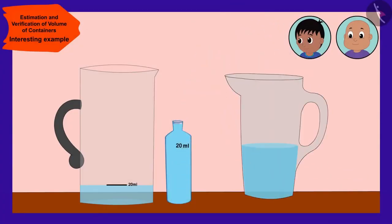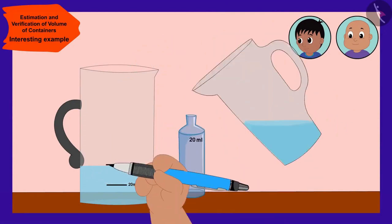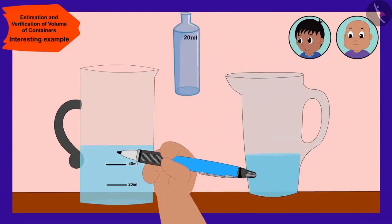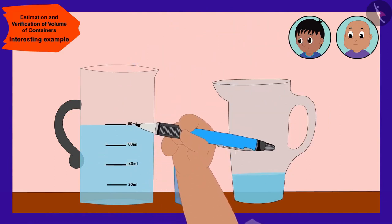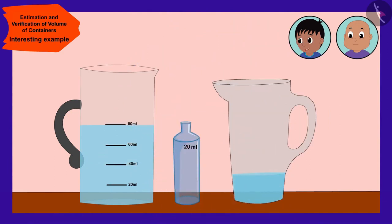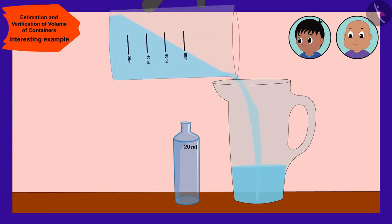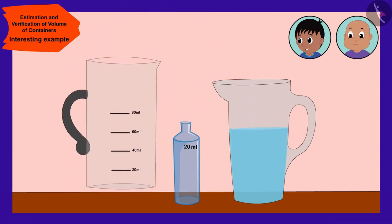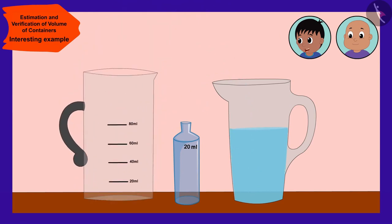We will fill the bottle completely each time and empty it in the jug, making a mark each time by adding 20 to the previous level. In this way, marks will be made at 40, 60, 80 ml. See Babalu, our measuring jug is ready. Now we can use it to find the volume of the coins.